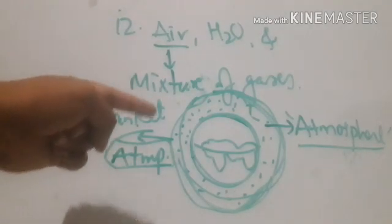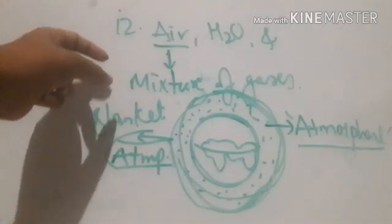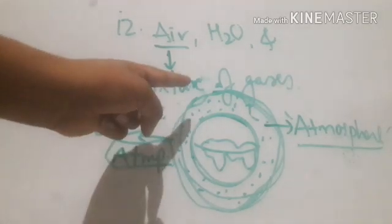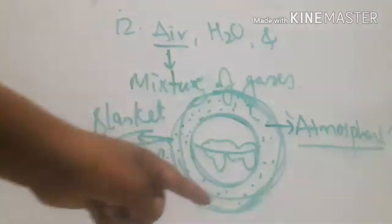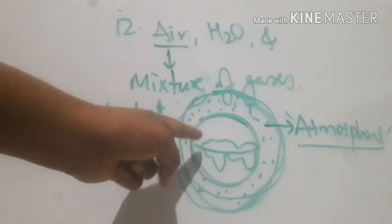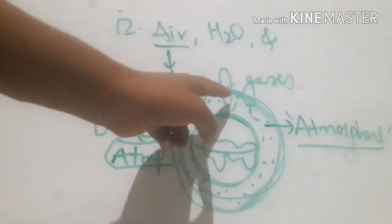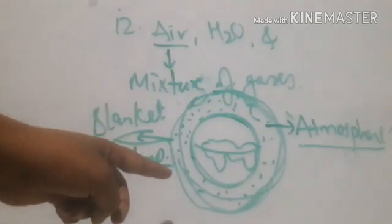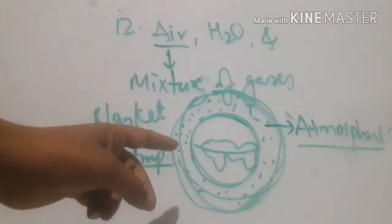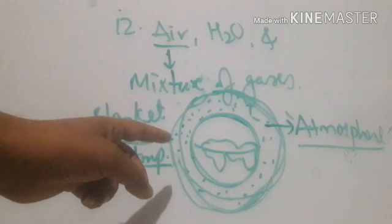Air is a mixture of gases, and this mixture of gases is present around the earth because earth has gravity and it is pulling the air towards it. Whatever blanket of air is present around the earth is called the atmosphere.